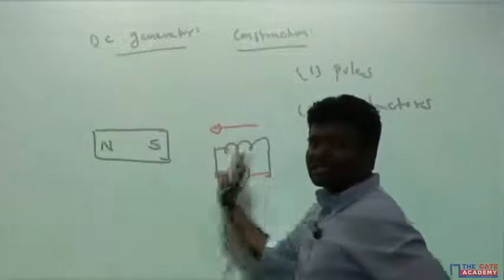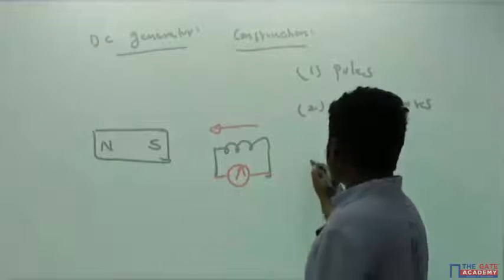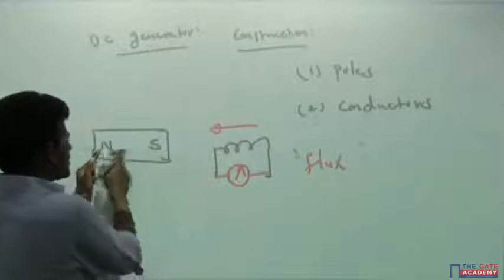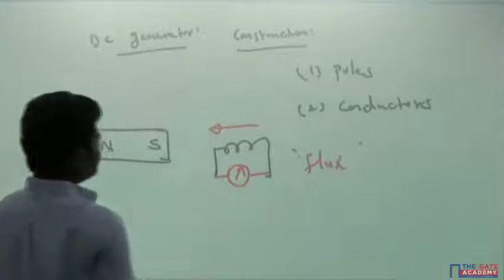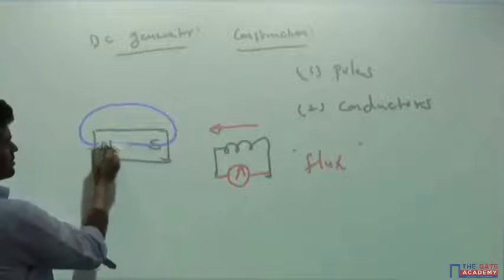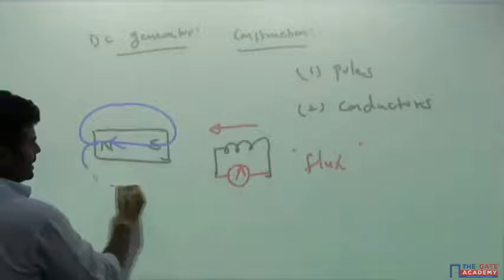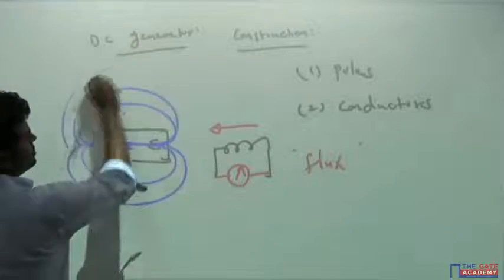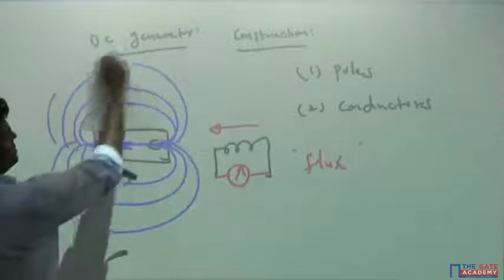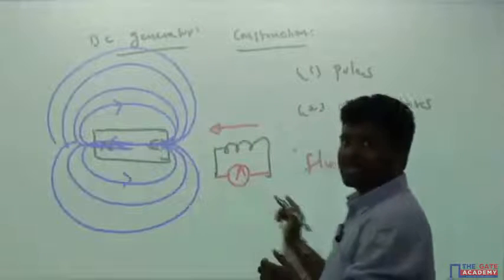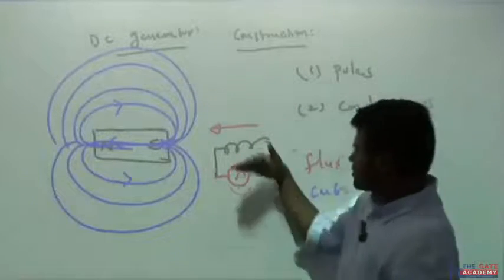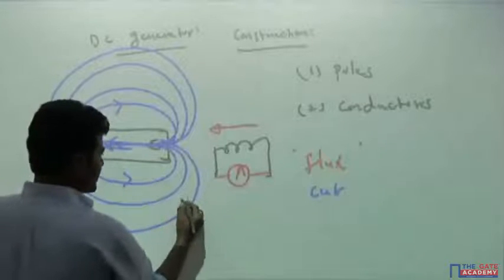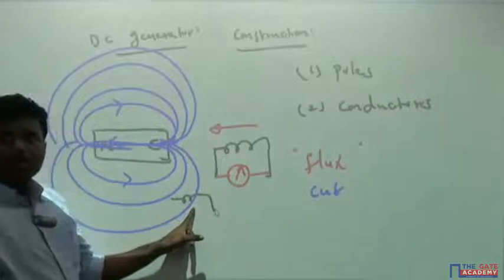So there is a magnet and a conductor. Whenever there is a change in conductor position, there is a change in flux — magnetic flux. The north and south poles have magnetic flux lines running from north to south outside and south to north inside. When the conductor comes and cuts these flux lines — using the technical word 'cut' — the number of flux lines cut changes with position.